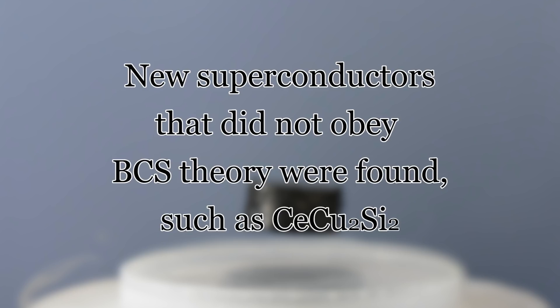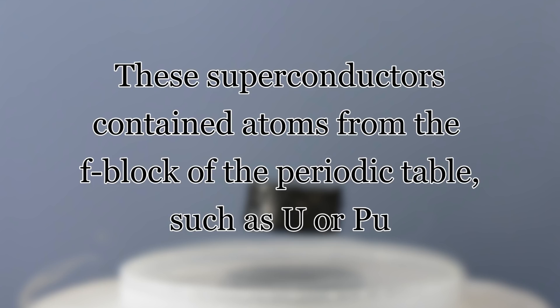Prior to advancements with cuprates, a new, different class of superconductors that did not obey BCS theory had been discovered. In 1979, a material consisting of cerium, copper, and silicon was found to have superconducting properties. In the next five years, several similar materials were found to have superconducting properties, all of which contained elements belonging to the F-block of the periodic table. Due to the presence of 4F or 5F electrons in these materials, such compounds are sometimes referred to as heavy fermion materials.